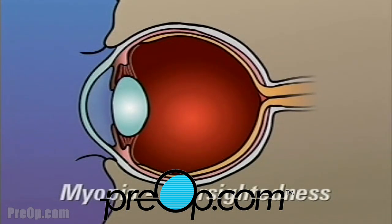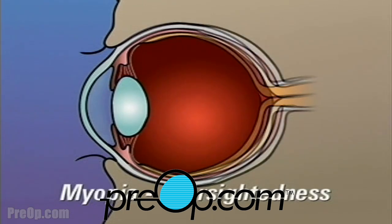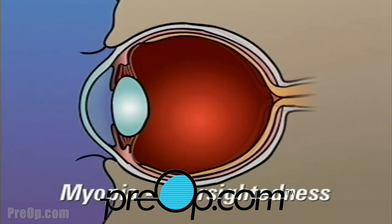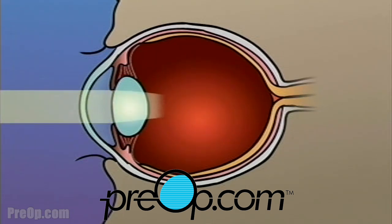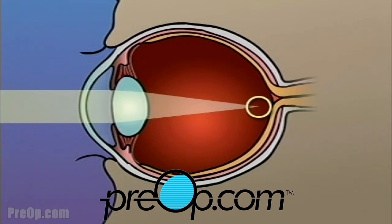Myopia, or nearsightedness, occurs when the shape of the eye is too long or the curve of the cornea is too extreme. In this case, light rays are focused on a point in front of the retina instead of on the retina itself.